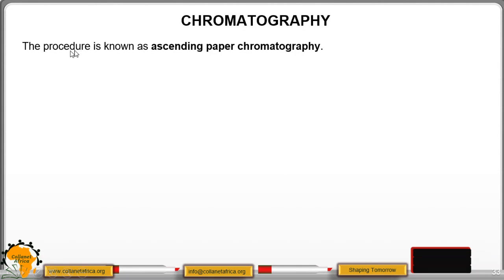The procedure is known as ascending paper chromatography. In this case, the moving solvent moves up — ascending.